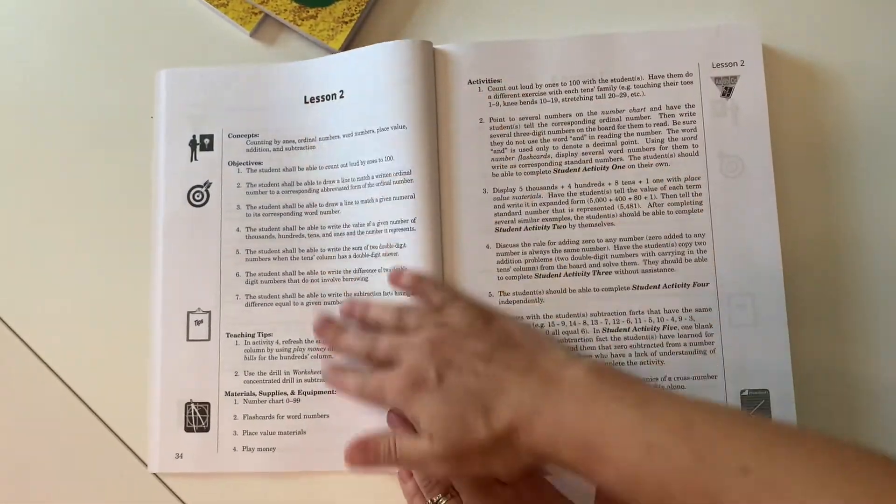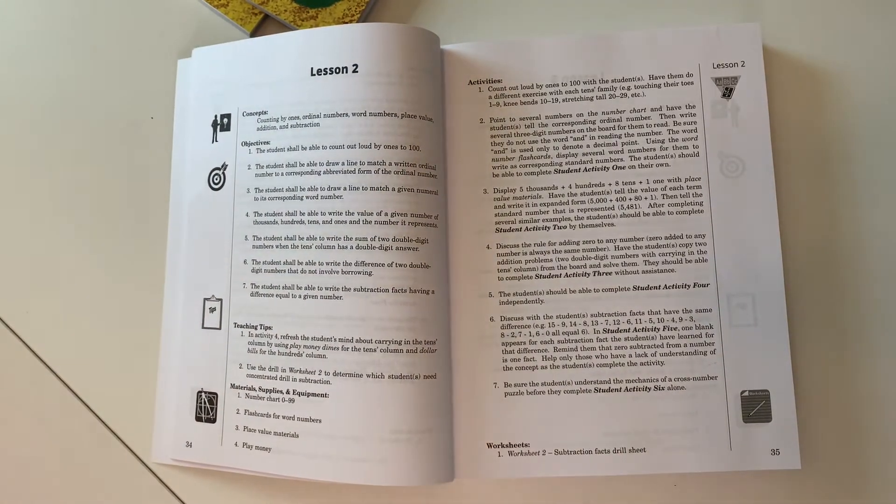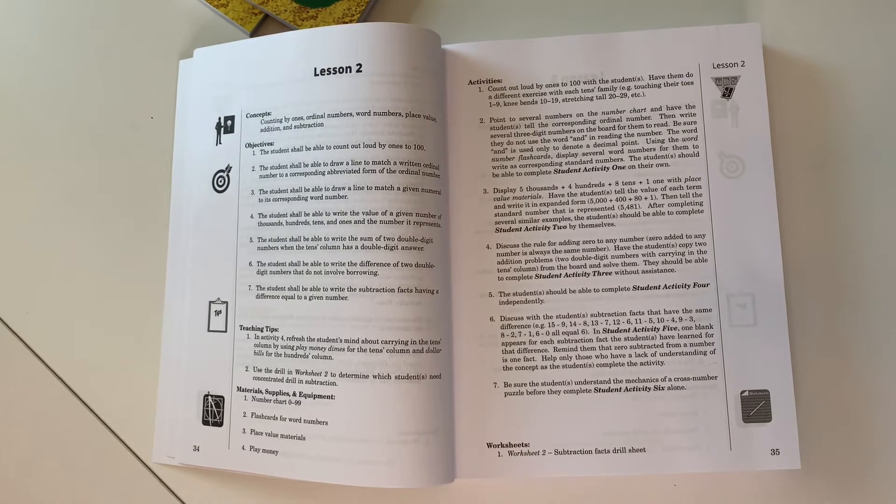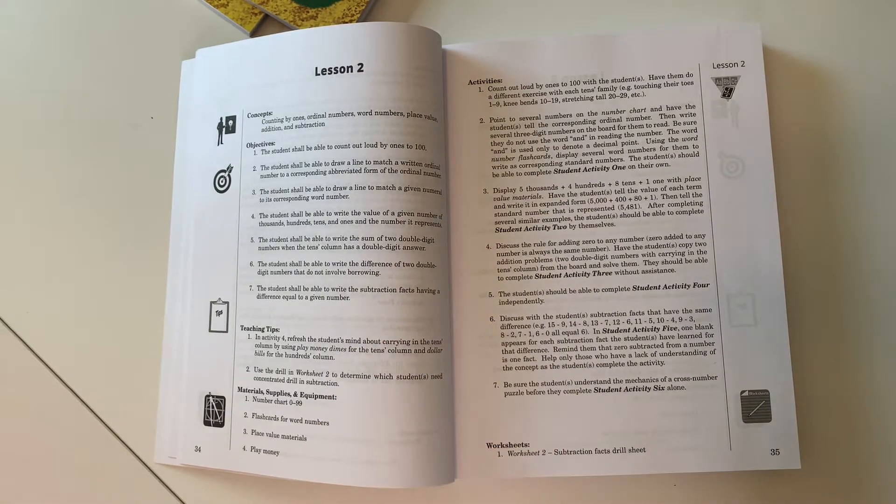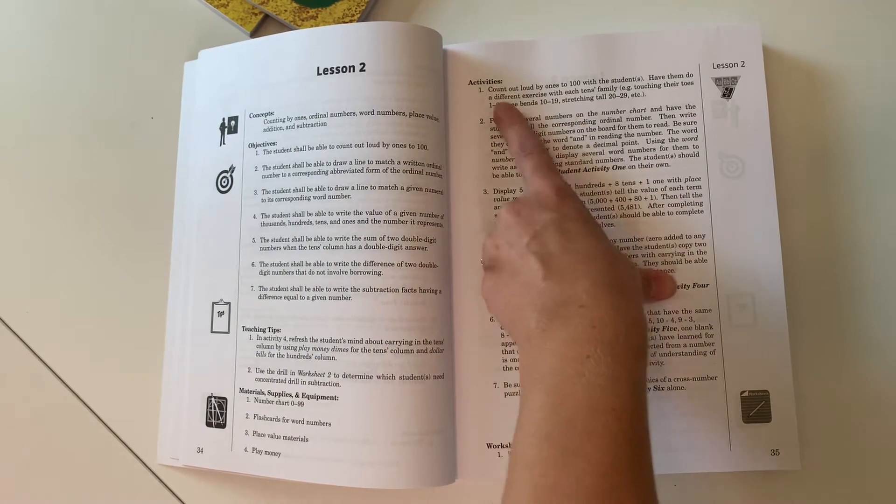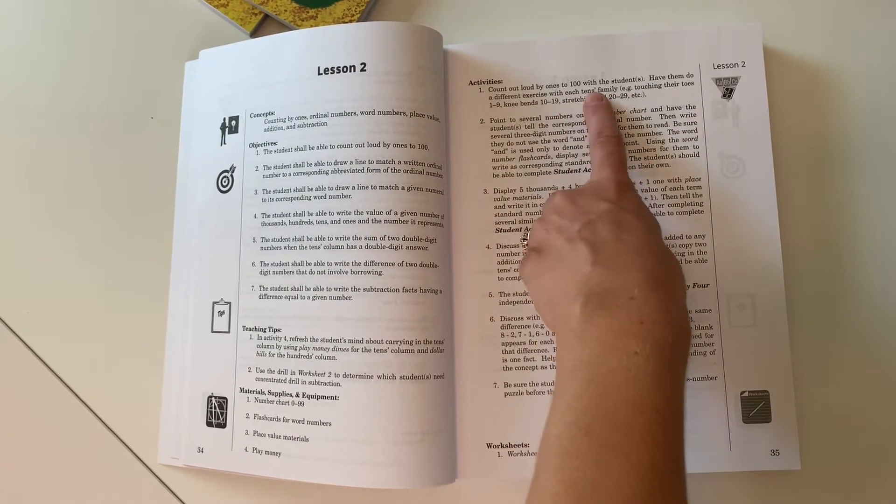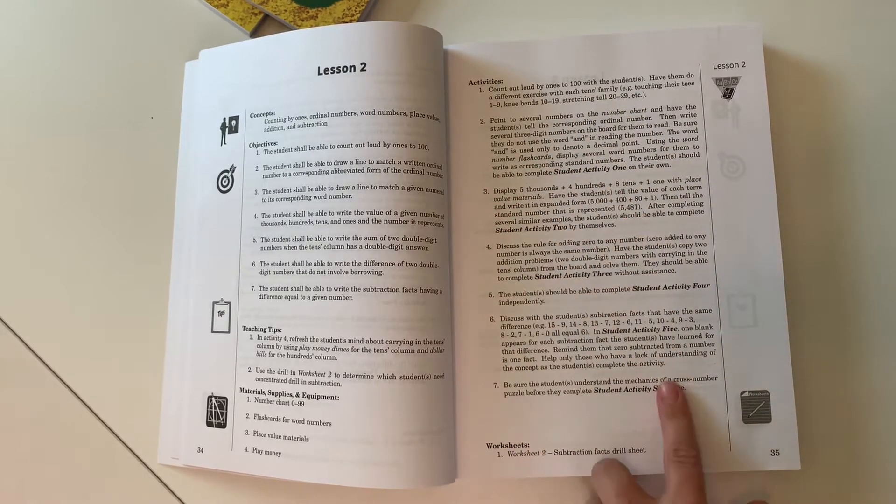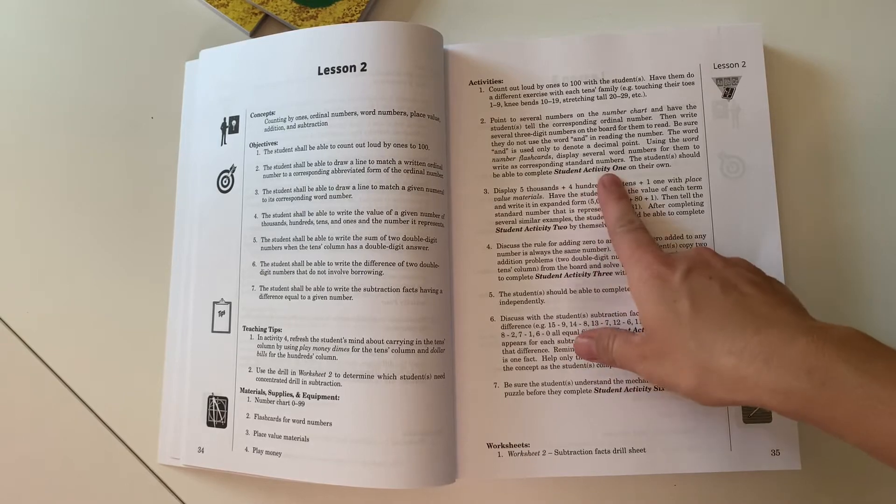So, if you are not familiar with the teacher's guide, the lessons look like this. It tells you the concepts at the top, the objectives. There's a few teaching tips and the materials and supplies that you need. There is usually something as a review or to start off your lesson.